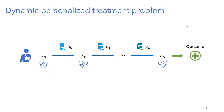In reality, this is not really a one-step process. It's more like a sequential decision-making process where at each step, the patient comes with some given features, the physician gives a treatment, then the patient comes back to the hospital. We observe new features, vitals change, and we keep treating the patient until at the end we observe an outcome. So this is really a sequential decision-making problem.